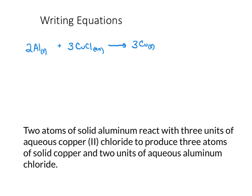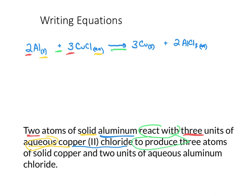Now we're going to color code everything to match up word form with the equation. 'Two atoms' — the coefficient two is labeled there. 'Solid' is indicated with the solid subscript. 'Aluminum' is the substance. 'React with' corresponds to the plus sign. 'Three units' is the coefficient three. 'Aqueous' is indicated by the AQ subscript. 'Copper(II) chloride' is the substance.